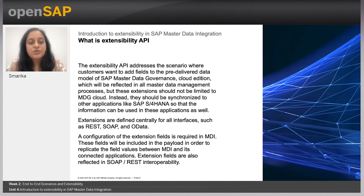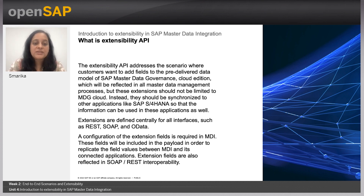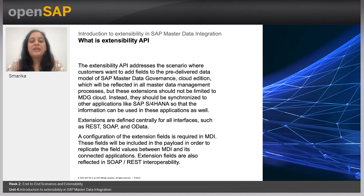Moving to what is extensibility: the extensibility API addresses the scenario where customers want to add fields to the pre-delivered data model of SAP Master Data Governance Cloud Edition, which will be reflected in all master data management processes. These extensions should not be limited to MDG Cloud — instead they should be synchronized to other applications like SAP S/4HANA so that the information can be used in those applications as well.